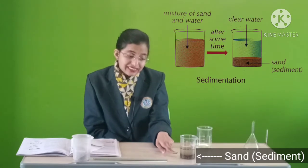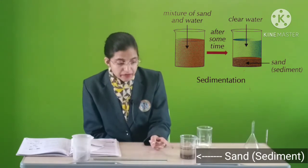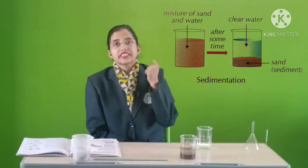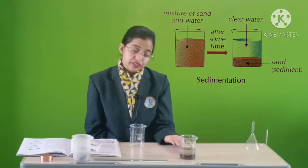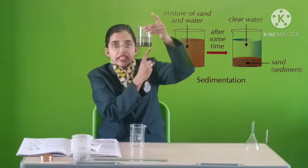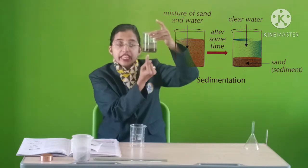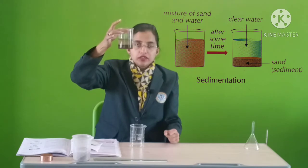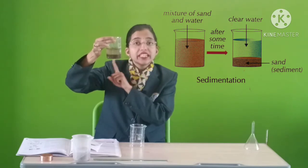You can see that the sand settles down. This layer of impurities which is settled down is called the layer of sediment. We get water above. This process is sedimentation, and this is how we can prove that sand is an insoluble impurity.